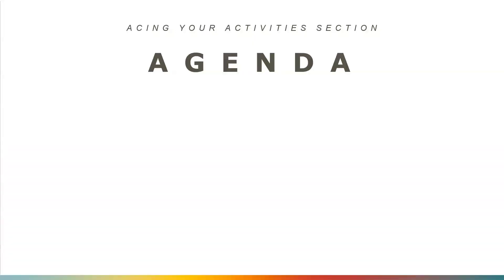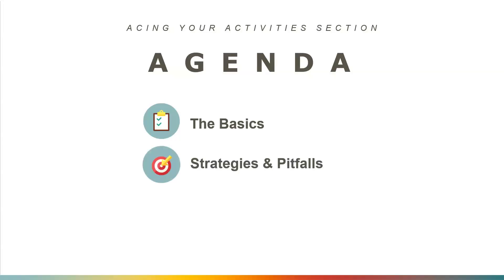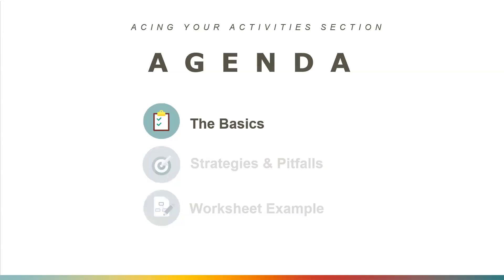Let's take a look at the agenda and see what we'll be covering today. First, we'll go over the basics — how the activities section is split up in the QuestBridge application — and then share some examples of what could be included in each subsection. Then we'll review some strategies for approaching this section as well as common pitfalls that we see as application readers. And finally, we'll walk through our worksheet together.